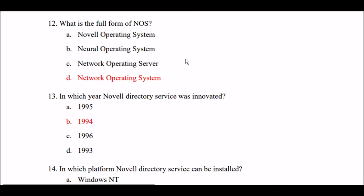Next question: What is the full form of NOS? Option A: Novel operating system. Option B: Neural operating system. Option C: Network operating server. Option D: Network operating system. The right answer is Option D — NOS stands for network operating system.